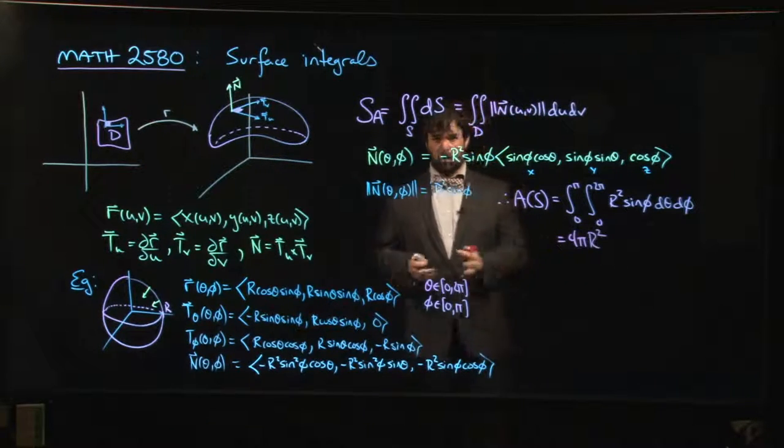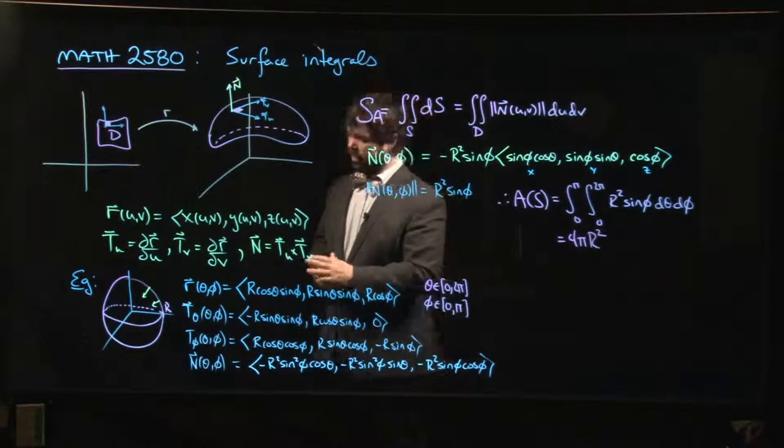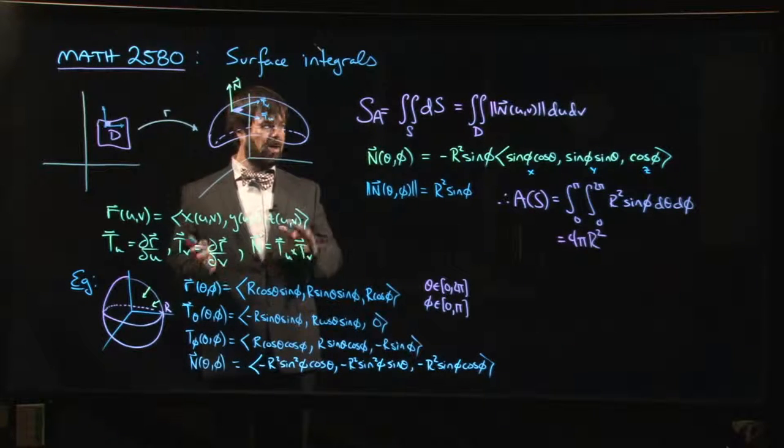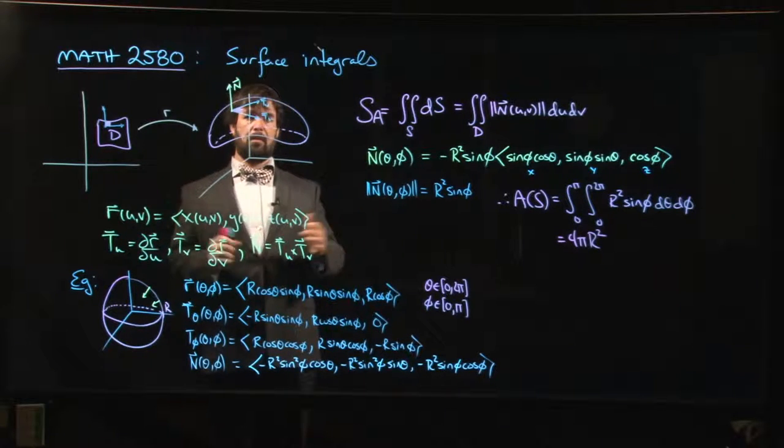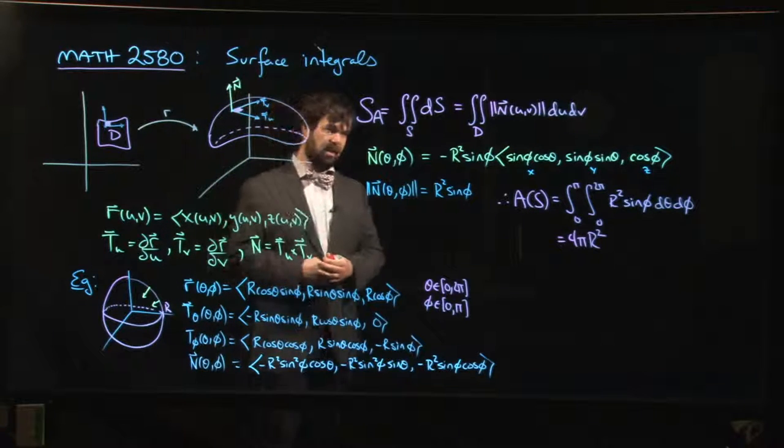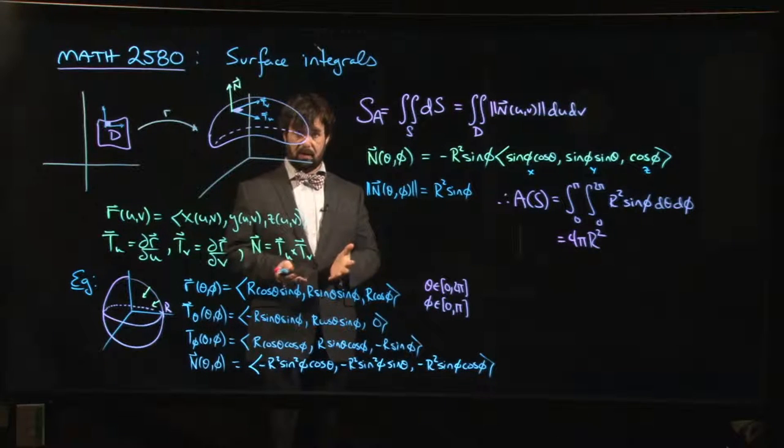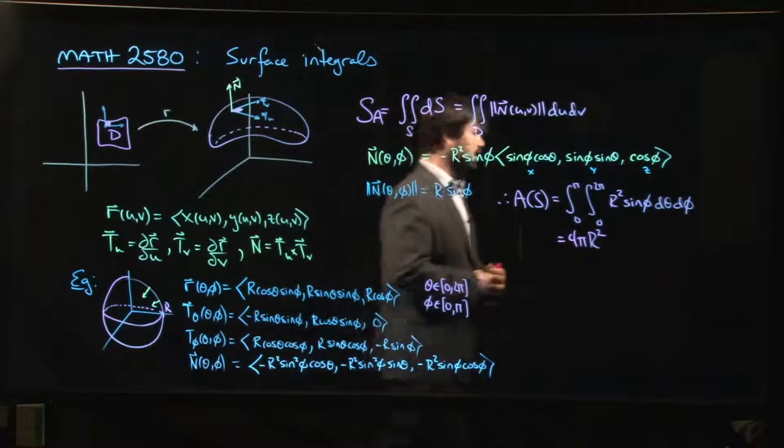And that checks out. That's a known result for the area of a sphere, 4 pi R squared. So, okay, one example doesn't prove the rule, but it gives us at least some confidence that we're on the right track with this formula.